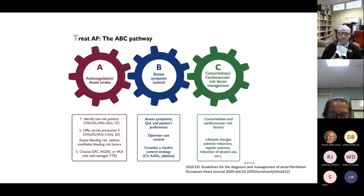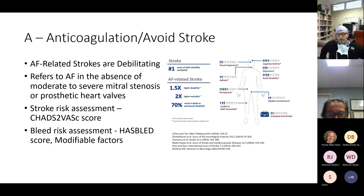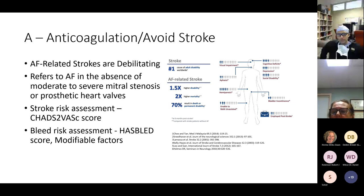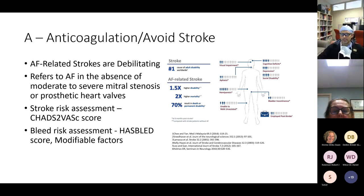The ABC pathway covers: A for anticoagulation and avoiding stroke, B for better symptom control, and C for comorbidities and risk factors. Starting with A — strokes associated with atrial fibrillation are very bad: 1.5x higher disability, 2x higher mortality, and 70 percent can lead to death or permanent disability. We use the CHA₂DS₂-VASc score and also assess bleeding risk with the HAS-BLED score. We also want to clarify whether AF is valvular or non-valvular.